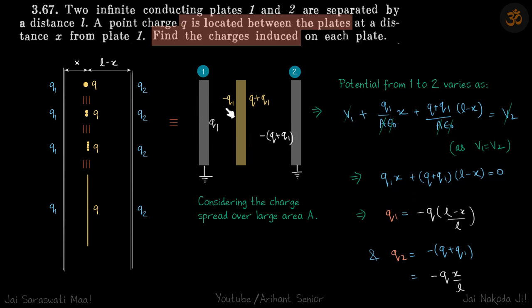And this side of the plate will be minus Q1. This side will be Q plus Q1. Conservation of charge. Total charge needs to be Q. And on this side of the plate it will be minus of Q plus Q1. So we have conserved the charge and we have taken care of the variables.